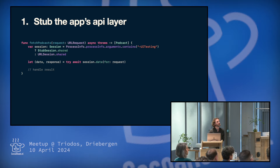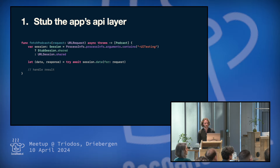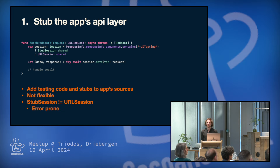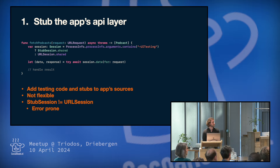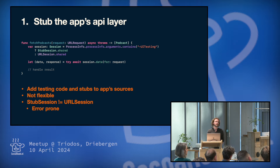If we go for the first approach, stubbing the app's API layer, then, for example, in some network code where we would access a URL session, we could say: if the process info arguments contains UI testing, then we're going to use our stub session. But this has some downsides because you have to add a lot of testing code and stubs to your app sources, and that's not ideal. It's also not very flexible because you want to execute a lot of UI tests, but you have to pre-set all those stubs in the code. And also your stub session is not the same as URL session, so it will behave differently — it's error prone.